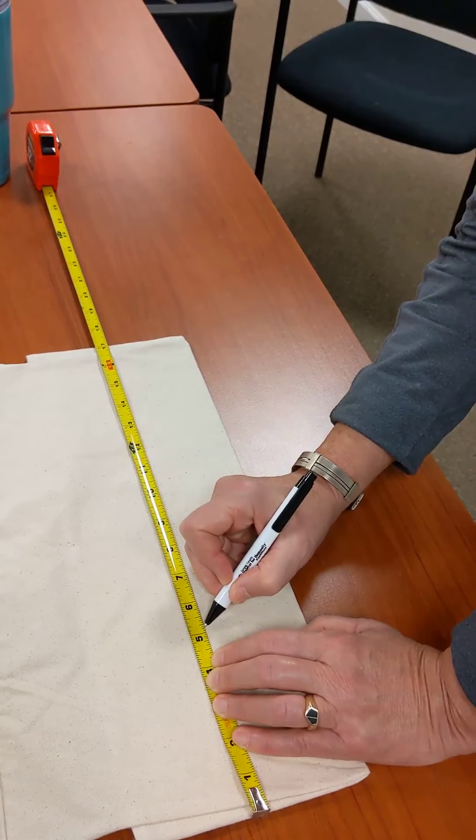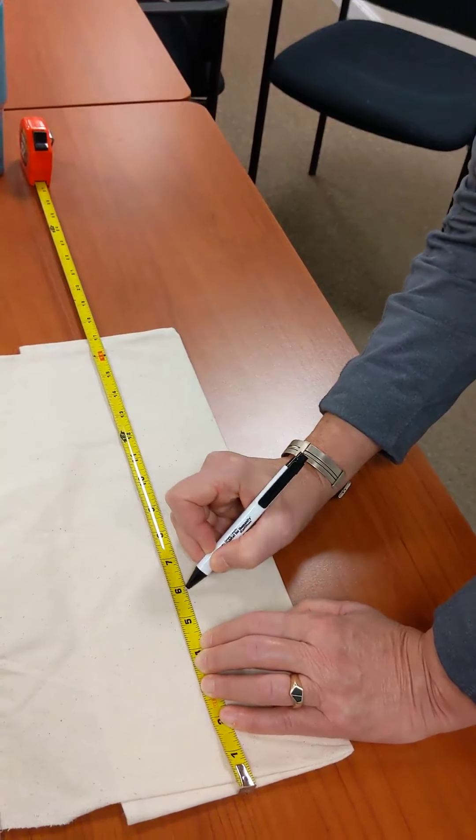And that way, when you read it, if it's sixteen, whatever mark you're on, that's the number above. And that's just the short little basic lesson on how to read a tape measure.